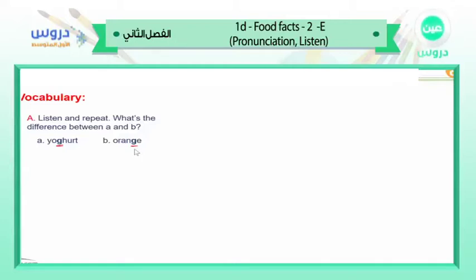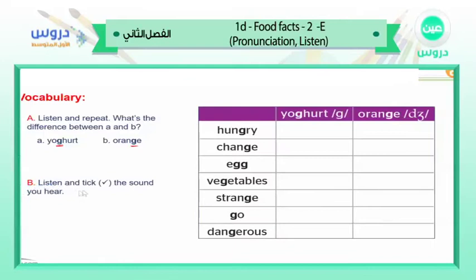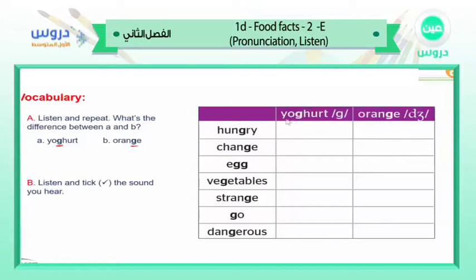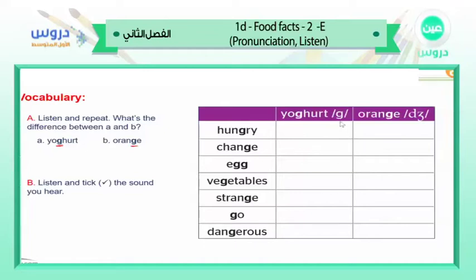Very nice. Part B — listen and tick the sound you hear. We have three columns: the first has many words, the second has the sound 'ga' just like yogurt, and the third has the sound 'ja' like orange. If we pronounce it like 'ga' we tick here; if like 'ja' we tick there.